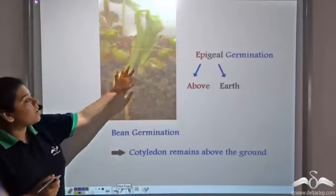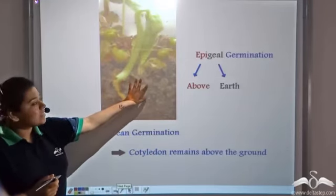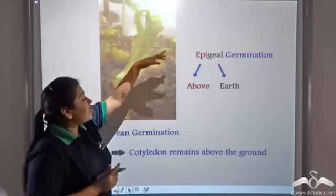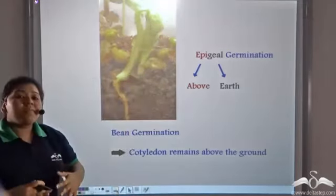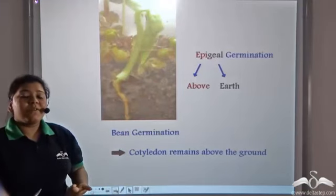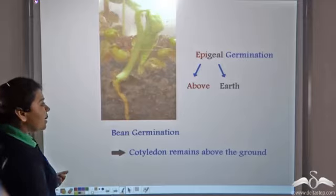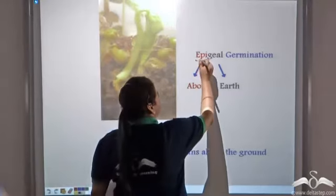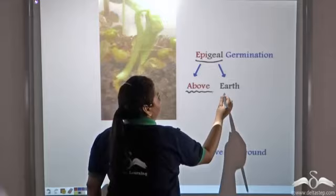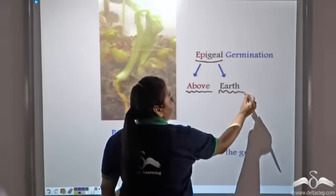In case of bean germination, notice the cotyledon — this is the cotyledon — it remains above the ground. So such type of germination is known as epigeal germination. 'Epi' means above and 'geal' comes from the word earth.